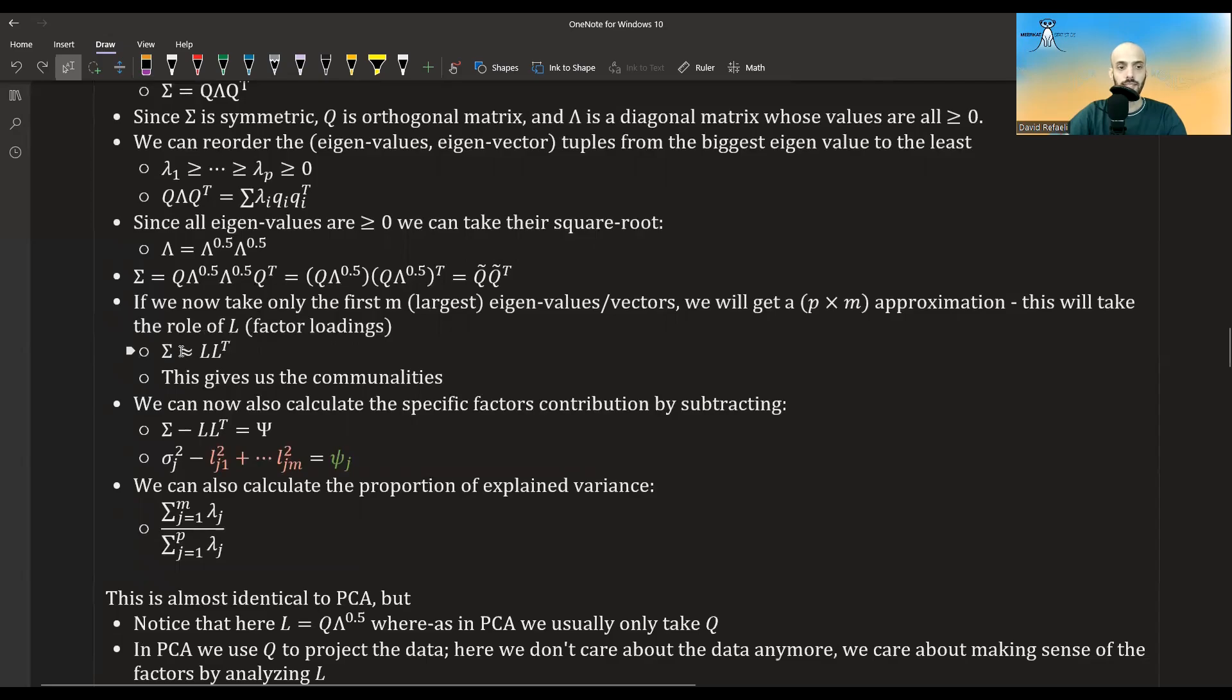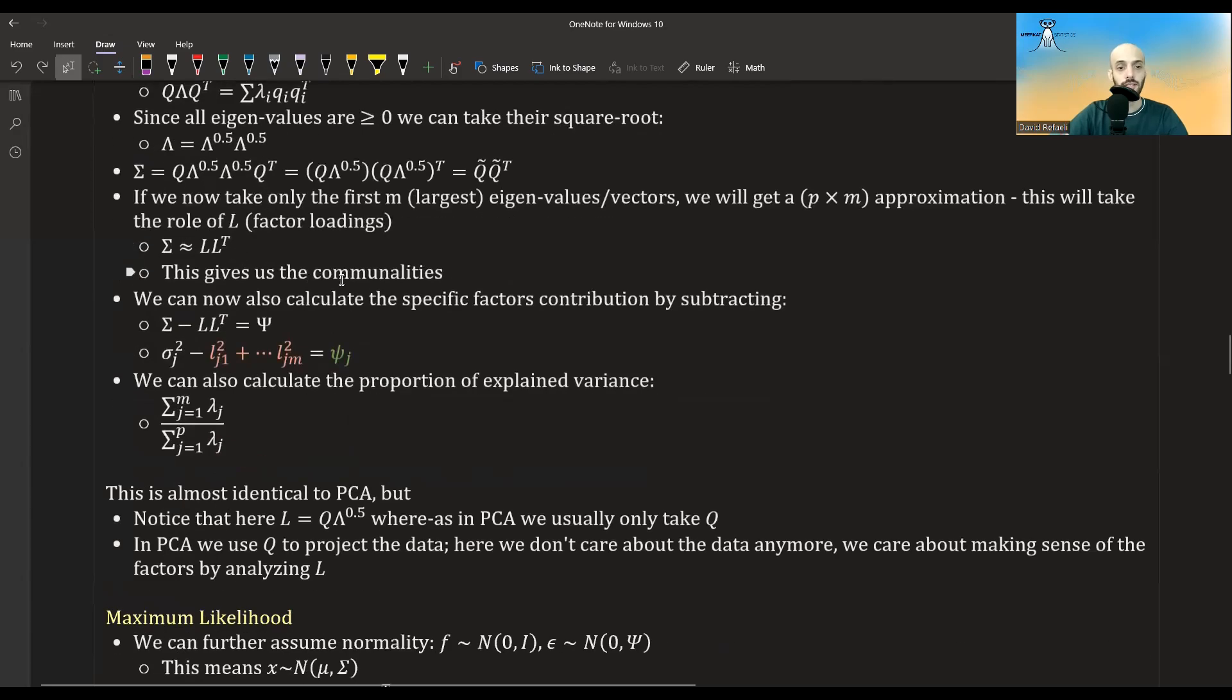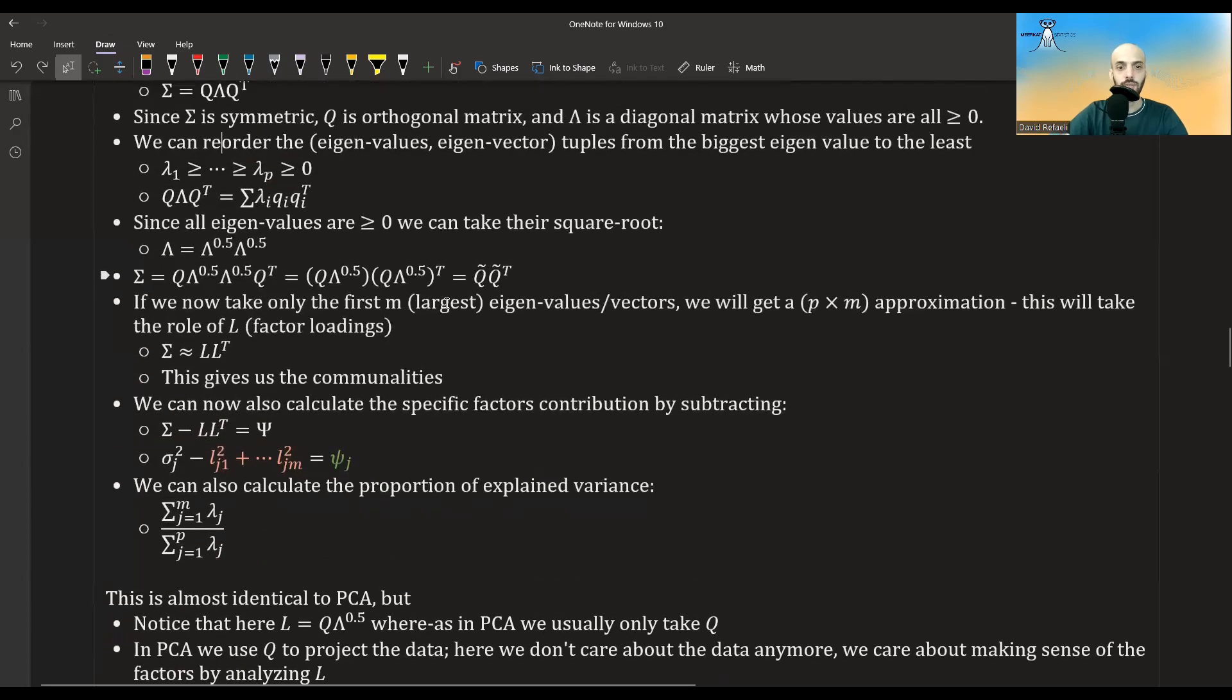Like, we hope that it will be approximately equal, but it's not necessarily the case. This M has to be large enough to capture enough of the structure of sigma. And so this gives us the commonalities. Yeah, this reduced Q matrix will be our L. This will be our factor loadings.